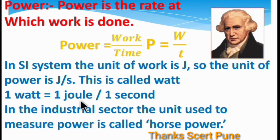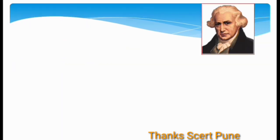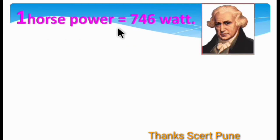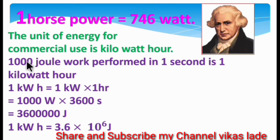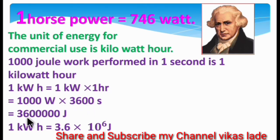One Watt is equal to one Joule per second. In the industrial sector, the unit used to measure large power is called horsepower. One horsepower is equal to 746 Watts. The unit of energy for commercial use is kilowatt-hour. One kilowatt-hour is equal to one kilowatt multiplied by one hour. One kilowatt is 1000 Watts and one hour is 3600 seconds, so one kilowatt-hour is equal to 3.6 × 10⁶ Joules.